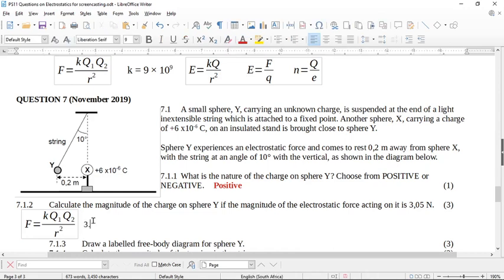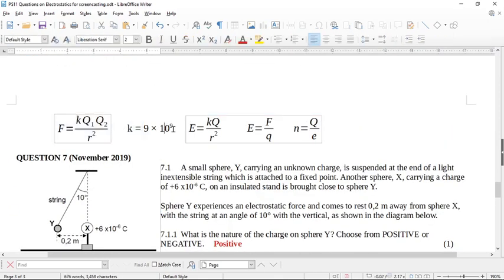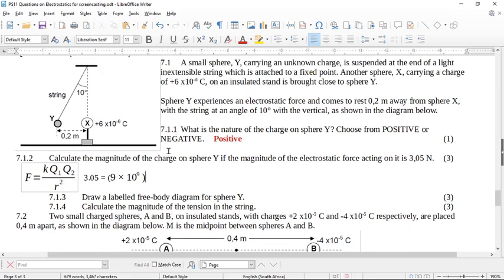The difference here is that we know what F is, so F is 3.05, which is going to be equal to k, and then Q, we don't know Q1, so Q sub Y we don't know, but we do know this other Q sub X because it is 6 times 10 to the negative 6. And then this is all over r squared, which is 0.2 squared.